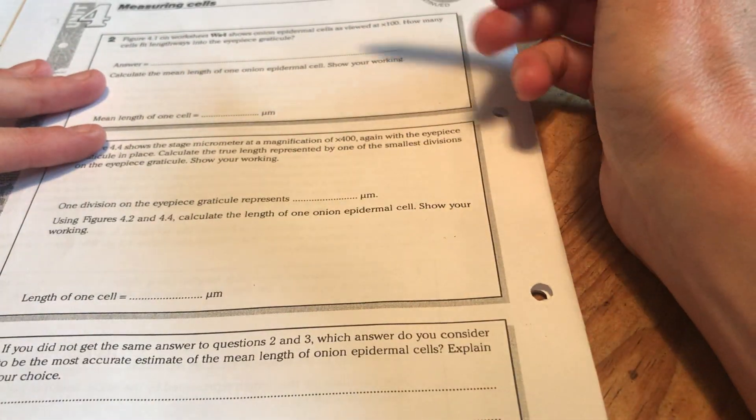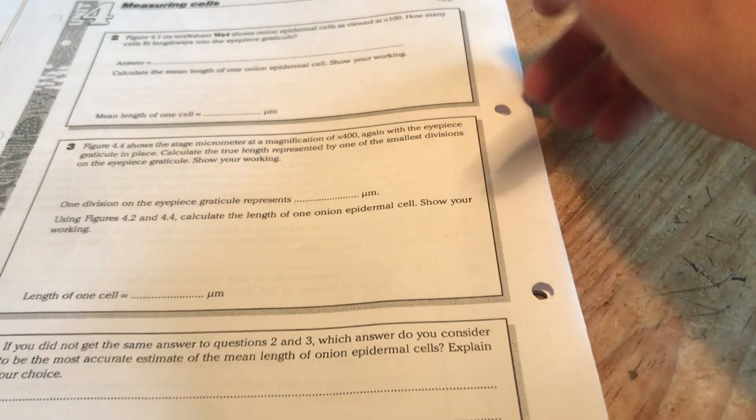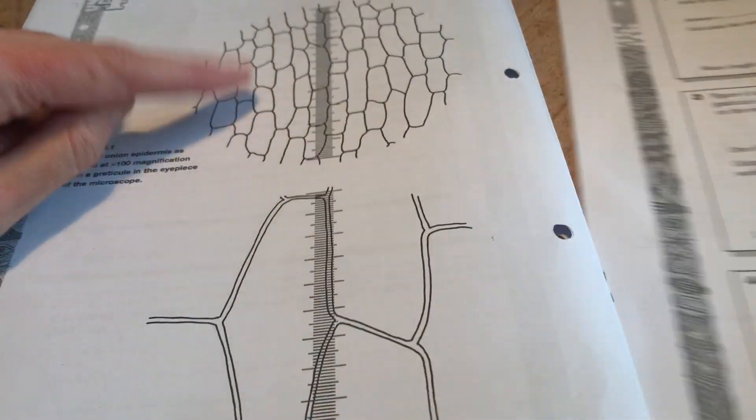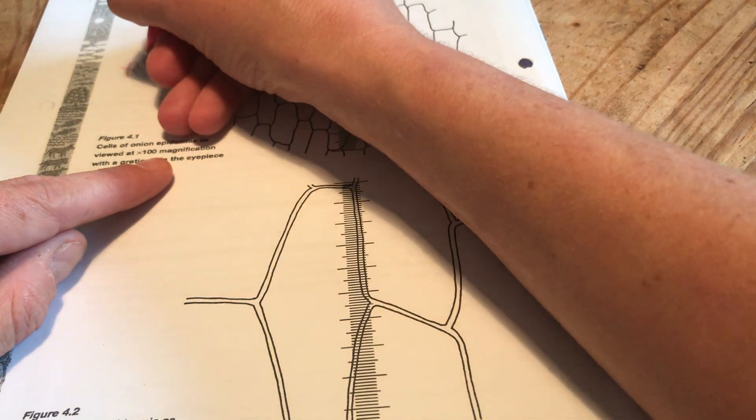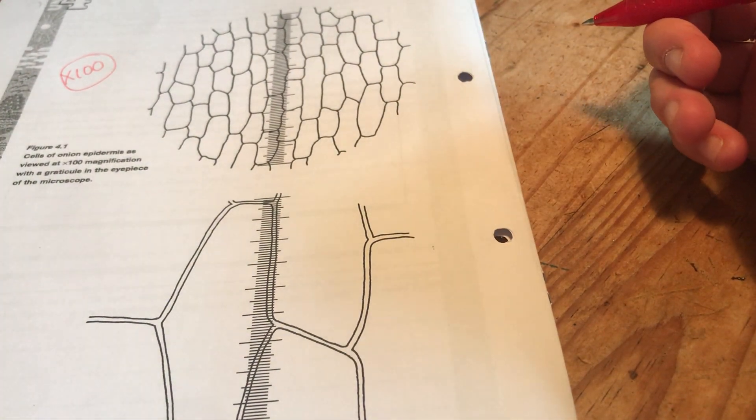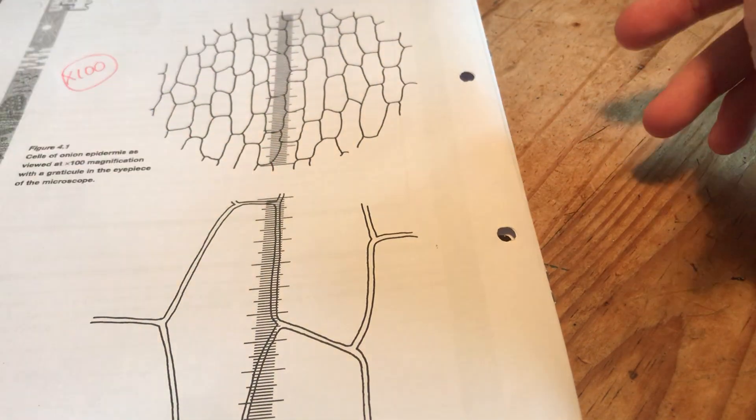So figure 4.1 on worksheet four shows an onion epidermal cell viewed at 100. Let's find that one. Figure 4.1, here we go, this one. So this again is at times 100 magnification. That's the same as I had here. And it's asking me how many cells can fit lengthways into the eyepiece graticule.